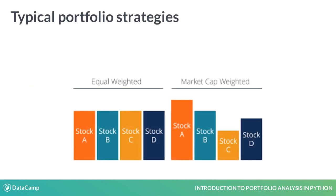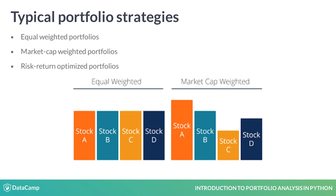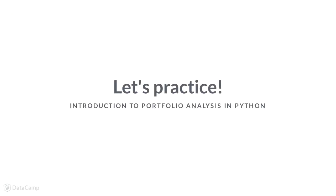Let's talk about typical portfolio strategies. The Equal Weighted Portfolio combines stocks and gives them all the same weight, as the name suggests. The market cap weighted portfolio creates individual weights based on the size of the company, measured by market capitalization. Market capitalization is the value of the company calculated by multiplying a company's shares by the current market price of one share. Lastly, a risk-return optimized portfolio has an optimized risk-return trade-off. You'll learn more about this in chapter 4. Let's begin!